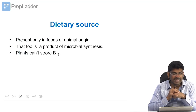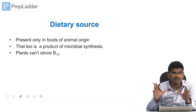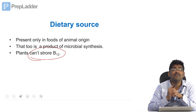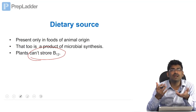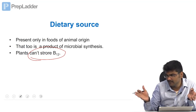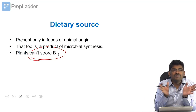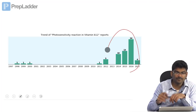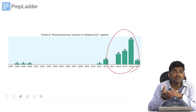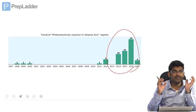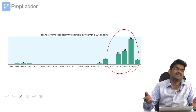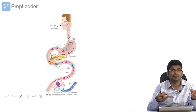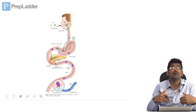Coming back to dietary sources: vitamin B12 is present only in foods of animal origin, and it ultimately comes from microbes. Plants cannot store vitamin B12 because vitamin B12 is photo-unstable. When light comes, vitamin B12 will break up. That is why photosensitivity reactions to B12 are being reported in scientific literature — because B12 is photosensitive.